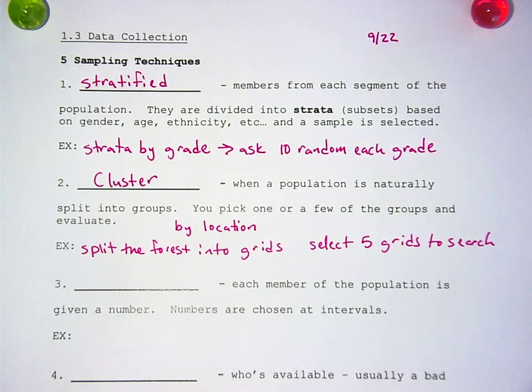All right, next one. Each member of the population is given a number. Numbers are chosen at intervals. This is called systematic.